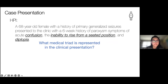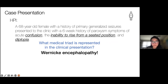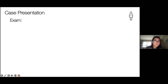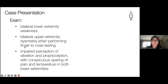These three symptoms actually represent Wernicke encephalopathy. Wernicke encephalopathy is based off of three key features: encephalopathy, ataxia, and ophthalmoplegia. The confusion is the encephalopathy, the inability to rise from a seated position is the ataxia, and the diplopia she was experiencing was the ophthalmoplegia. On physical exam, she had bilateral lower extremity weakness, bilateral upper extremity dysmetria on finger-to-nose testing, and impaired perception of vibration and proprioception, with conspicuous sparing of pain and temperature in both lower extremities.